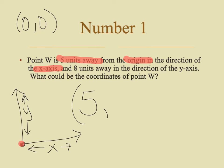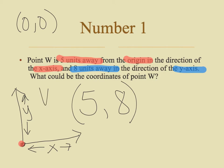The problem is also telling us that it is eight units away in the direction of the y-axis. So that means that I'm going to be moving up the y-axis eight units, which means that my y-coordinate has to be eight. So what could the coordinates of point W be? Point W would be the coordinates (5, 8).